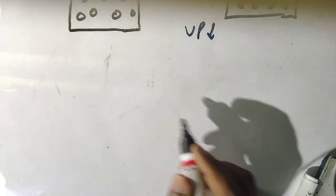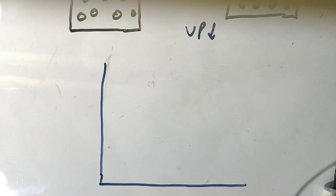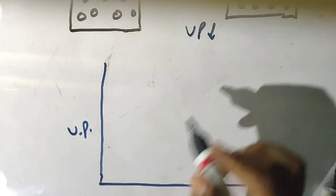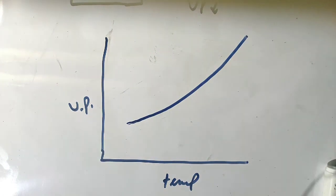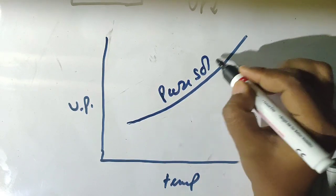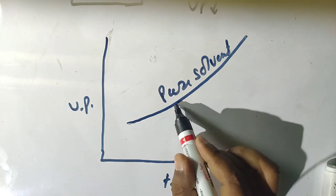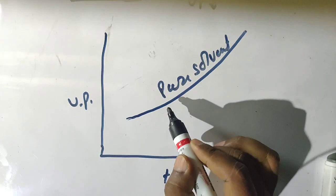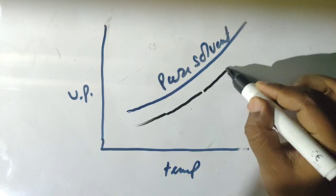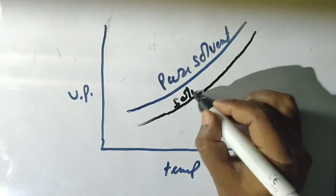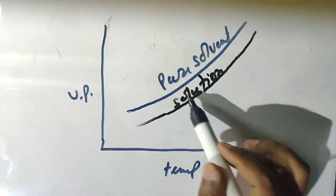This decrease in vapor pressure can be explained with the help of a graph. Suppose this is the temperature axis and this is the vapor pressure axis. When temperature is increased, vapor pressure of the liquid increases. This curve represents the pure solvent, for example pure water. When a non-volatile solute is added, its vapor pressure decreases, shown by a lower curve, which represents the vapor pressure of the solution.